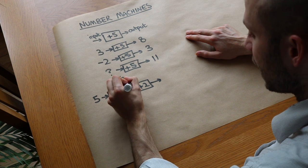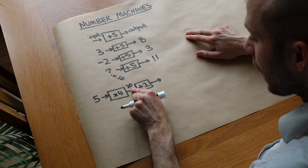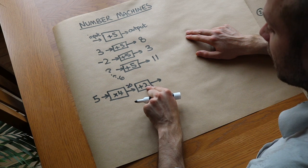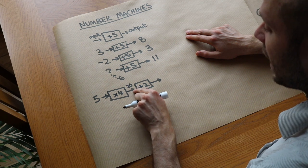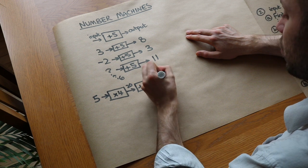So we could put the 20 as the output of this number machine and then that 20 gets fed into this next number machine. So now the 20 becomes the input of this number machine. 20, when you add 2 to it, becomes 22.